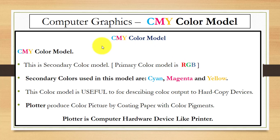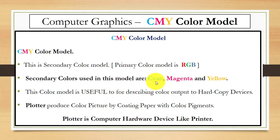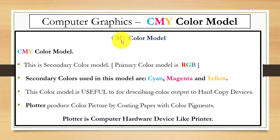The CMY color model is the secondary color model, and the secondary colors used in this model are cyan, magenta, and yellow. C stands for cyan, M for magenta, and Y for yellow.